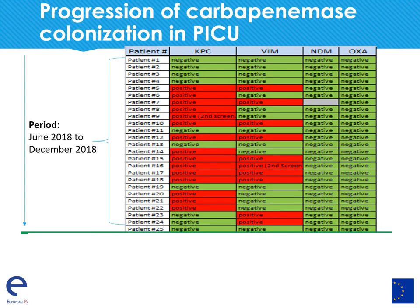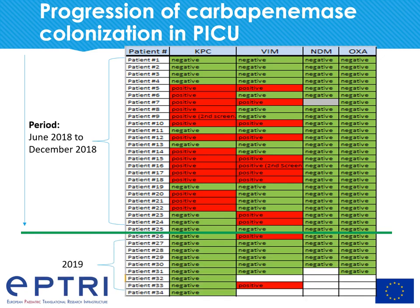Here we can see the progression of carbapenemase colonization in our pediatric ICU. During the first months of the study in 2018, there were many patients colonized with carbapenemases, mostly KPC and VIM. However, towards the end of the study in 2019, fewer children were colonized with carbapenemases, especially KPC.